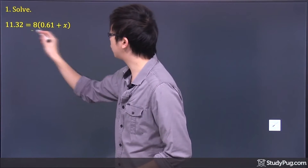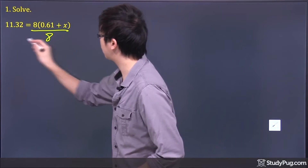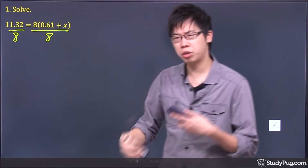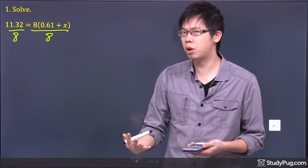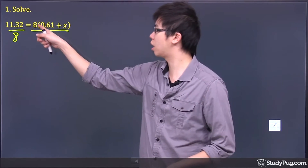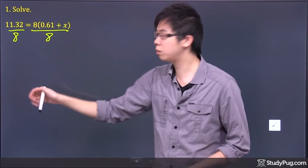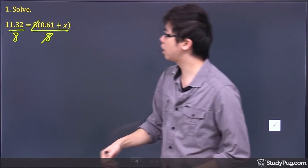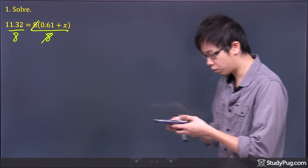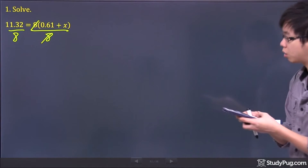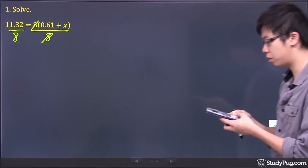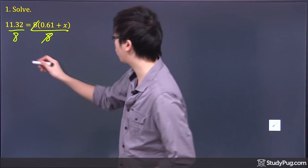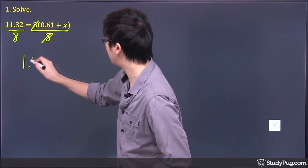So what I would do first is divide by 8 on both sides, or you can think about cross-multiplying — just times 8 to the bottom — same thing happens. Those 8s get cancelled, so 11.32 divided by 8, we have 1.415.